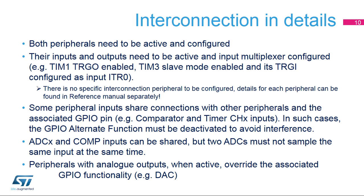These recommendations should be followed to ensure proper interconnection between peripherals and avoid unexpected behaviors. Both peripherals need to be active and their inputs and outputs configured. When peripheral inputs share connections with other peripherals, associated GPIO alternate functions must be deactivated to avoid interference. Peripherals with active analog outputs override the associated GPIO functionality.